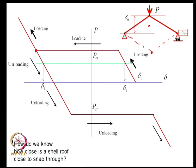For example, in a shell roof structure carrying self-weight and wind load, how do we know how close the shell is to snap-through? We cannot allow snap-through in roof structures, so we need to determine what margin of safety exists against such a phenomenon. This is the type of question we would be interested in.